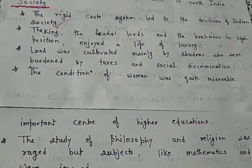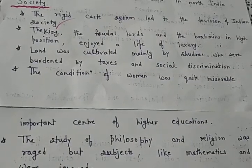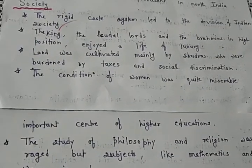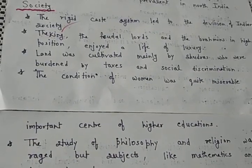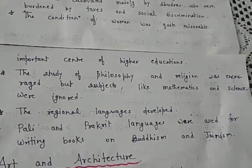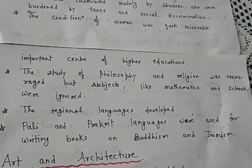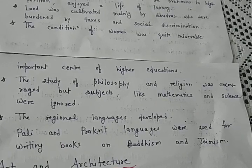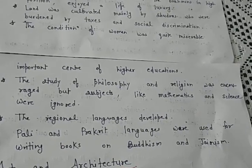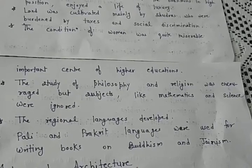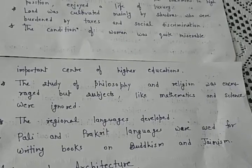The conditions of women were also quite miserable — they were deprived of education. The evil practices of sati, child marriage, and polygamy contributed to the decline in the status of women. Do you know that women of royal families committed Johar — immolation in fire to protect their honor if their menfolk were defeated or killed in battle.